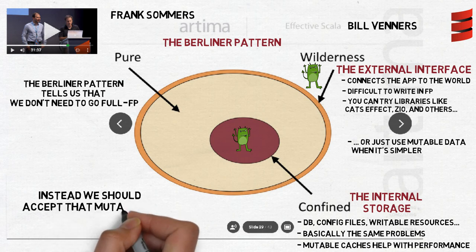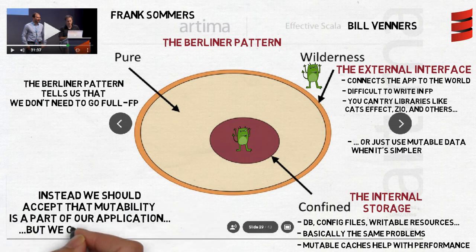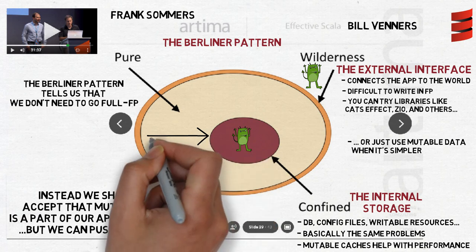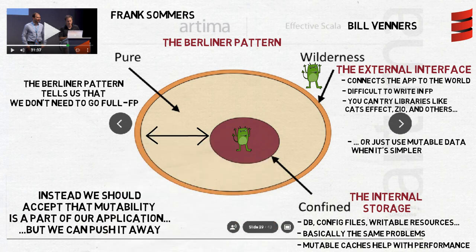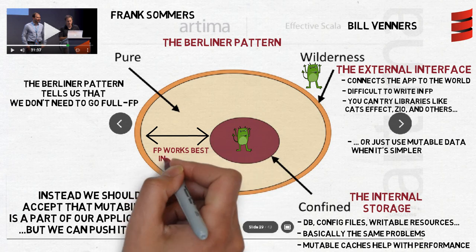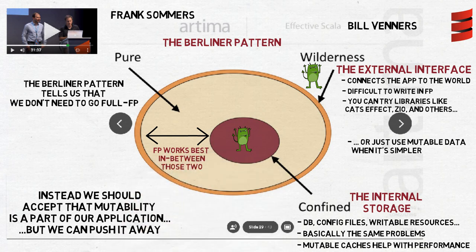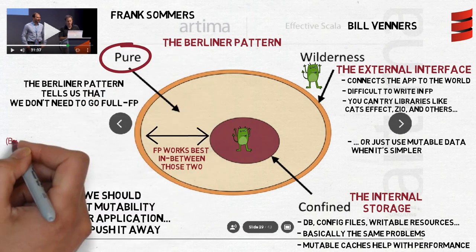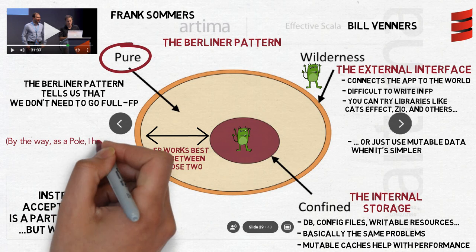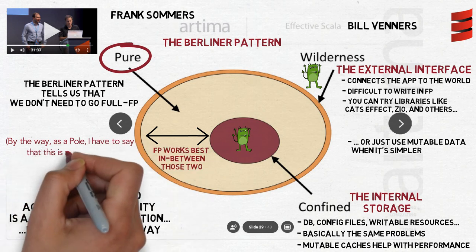Instead, we should accept that mutability is a part of our application, but we can push it away, outside and inside. We start from the middle part, where all our business logic resides, and where FP really shines. And then we slowly work in both directions. In the end, we will be left with mutability only in the thin layers of external and internal interfaces, in places where it makes sense to have them.